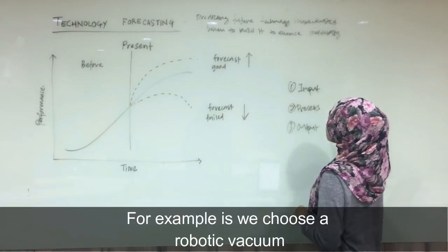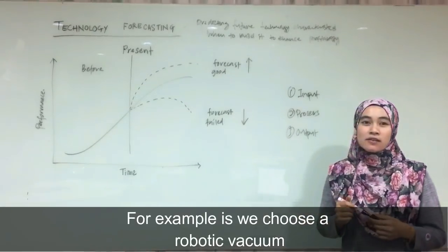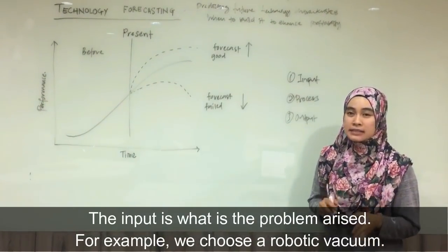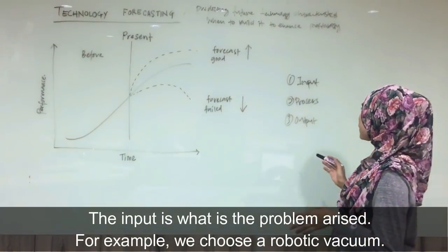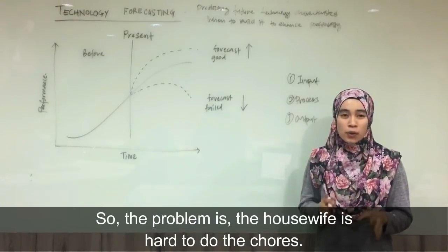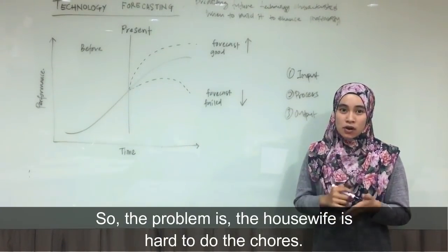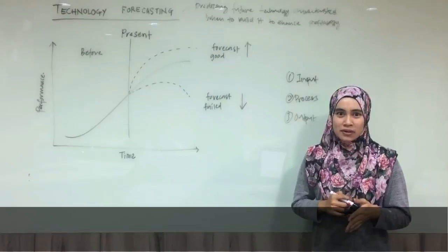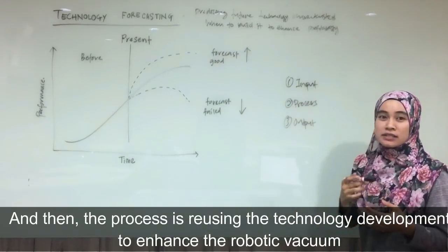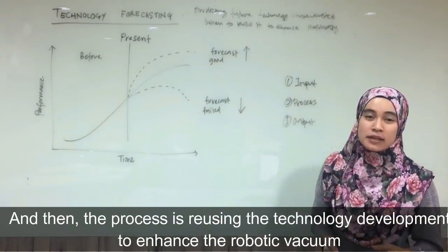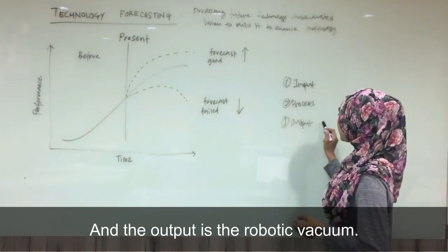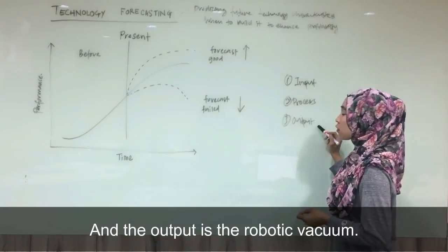For example, we choose a robotic vacuum. The input is what is the problem that arises. For example, the problem is that the housewife finds it hard to do household chores. Then the process is using technology development to enhance the robotic vacuum, and the output is the robotic vacuum.